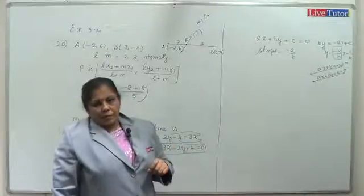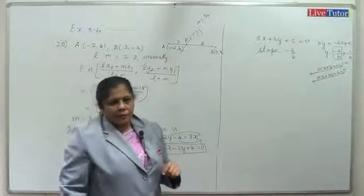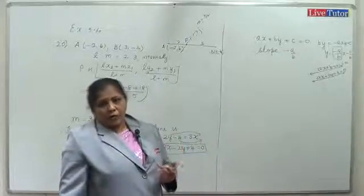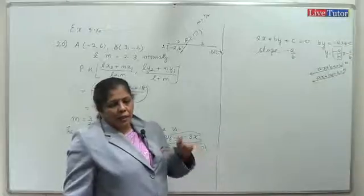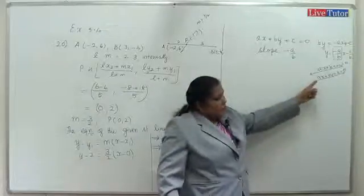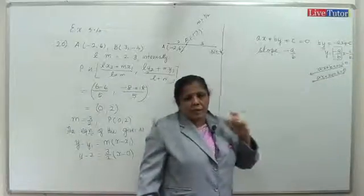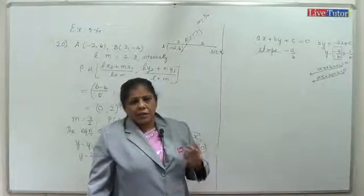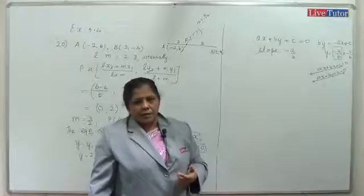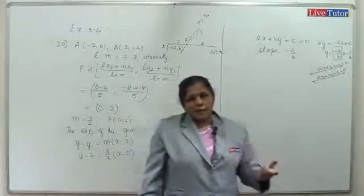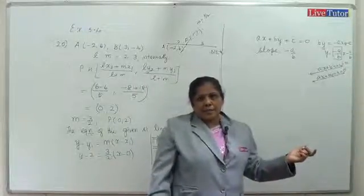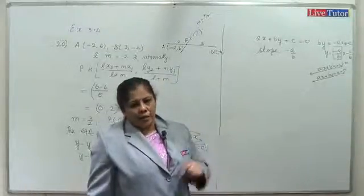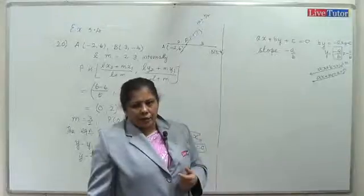The slopes are equal for parallel lines. For a line perpendicular to the given line, if m1 equals minus a by b, then m2 equals minus 1/m1 equals b by a. So for perpendicular lines, the coefficient of x and y are swapped.